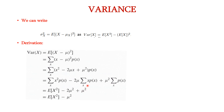Minus 2 mu squared, since summation of x into p of x can be expressed as mu, so 2 mu into mu gives 2 mu squared, plus mu squared. After subtracting we get mu squared, so it is E of x squared minus mu squared. Since mu squared can be written as E of x whole square, thus we arrive at E of x squared minus E of x whole square. So the variance can also be expressed as E of x squared minus E of x whole square.